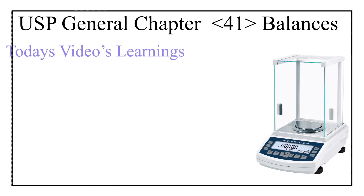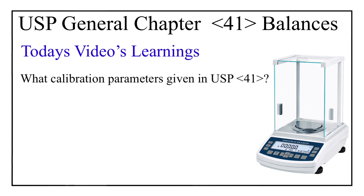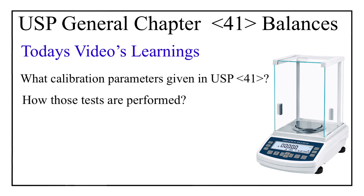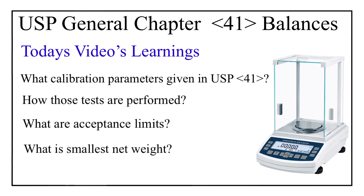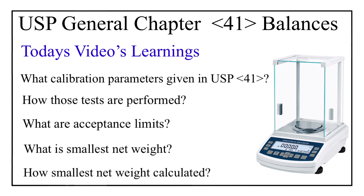In this video we will learn what are the balance calibration parameters mentioned in USP Journal Chapter number 41, how those test parameters are performed, and what are their acceptance limits. Along with this, we will also learn what is the smallest net weight or minimum weight and how the smallest net weight is calculated. Let's get started without any further delay.